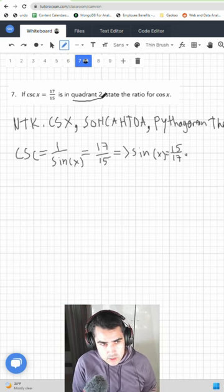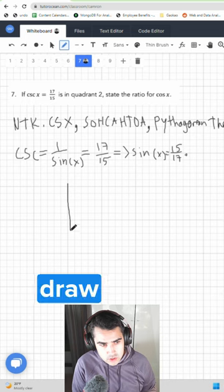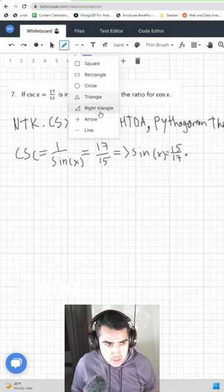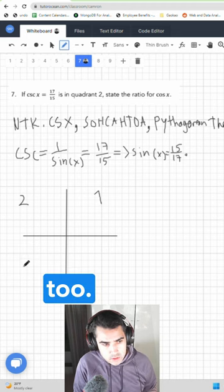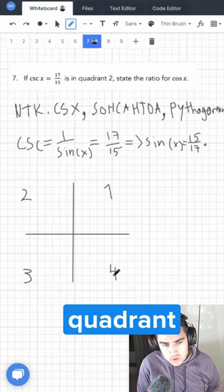So we also know that it's in quadrant 2. So we can draw our Cartesian plane right here. And this is 1, this is 1, this is 2, this is 3, and this is quadrant 4.